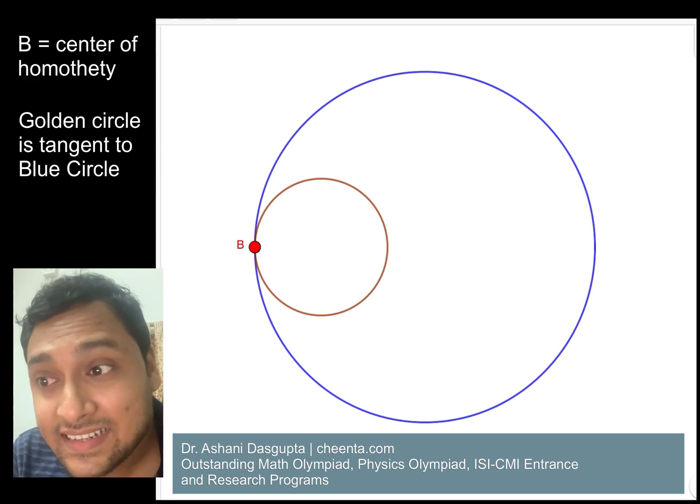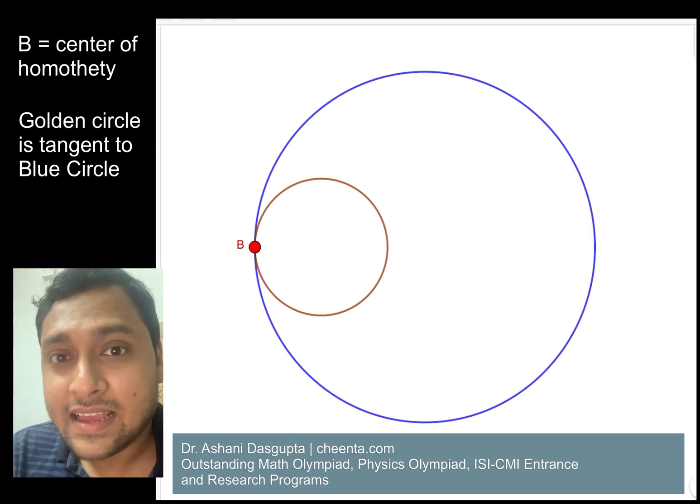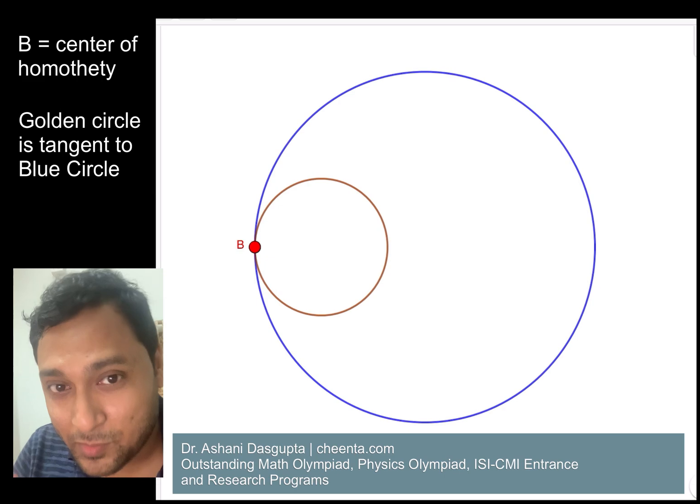Center of the golden circle becomes the center of the blue circle, and a lot of other properties are also preserved. But let's look at the tangent.